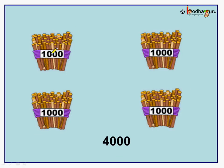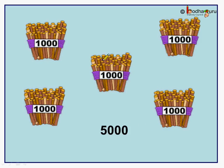What about one, two, three, four bundles of thousand? It is equal to four thousand. Here, there are one, two, three, four, five bundles of thousand and it is equal to five thousand.